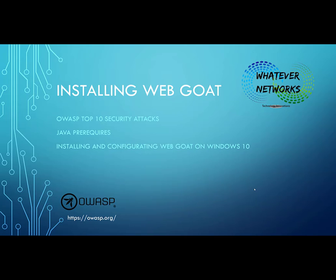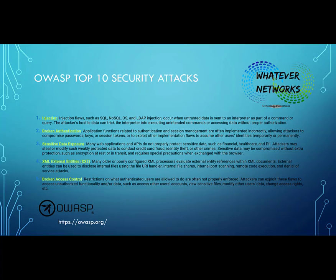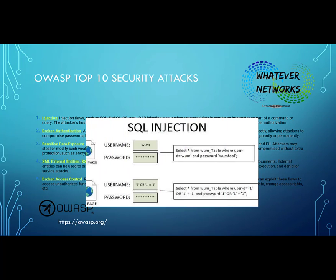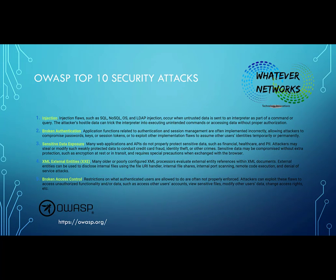Let's go through what these top 10 security attacks are. The first one is injection. Injection flaws such as SQL or LDAP can occur when untrusted data is sent to the interpreter as part of a command or query. The attacker's hostile data can trick the interpreter into executing unintended commands or accessing data without proper authorization — for example, injecting commands into a URL or a form to return data that was not intended, such as retrieving other users named Smith instead of just the one you queried.